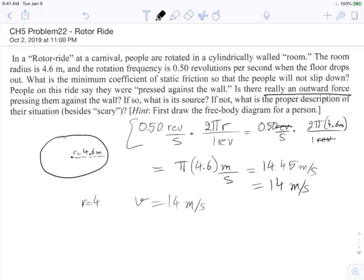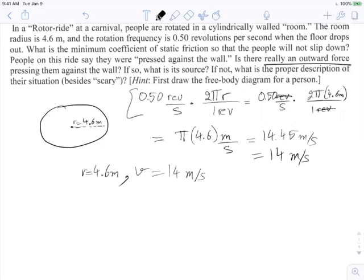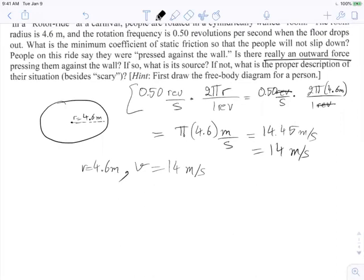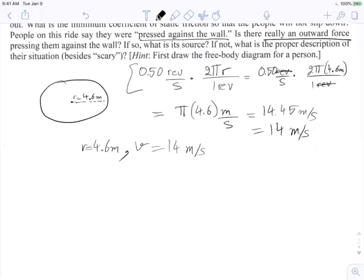So that's useful. We realize what they're telling us is the velocity is 14 meters per second and the radius is 4.6 meters—that's useful information when working with uniform circular motion. They're saying people are not slipping down; they're pressed up against the wall. So what's going on? What is the friction? How hard are they pressed up against this wall that they don't just fall down?